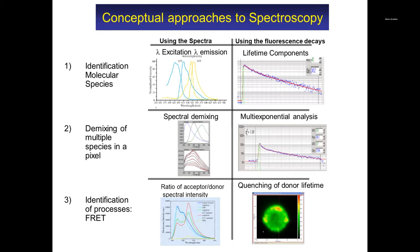Why do you want to do FLIM? For example, you want to do FLIM to identify molecular species. That would be CFP, that would be YFP, and then you can measure the lifetime components. CFP in the presence of YFP with FRET will give you curvature in the time-domain decay, and you use spectral demixing or multi-exponential decay fitting to obtain the amount of FRET.